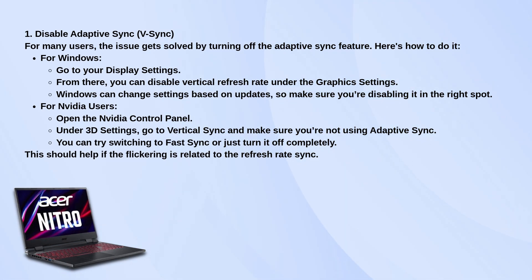If you're using an NVIDIA graphics card, open the NVIDIA Control Panel. Go to 3D Settings, find the Vertical Sync option, and either turn it off completely or switch it to Fast Sync. Adaptive Sync seems to be the one that causes trouble for a lot of users, so getting rid of that could make a big difference.